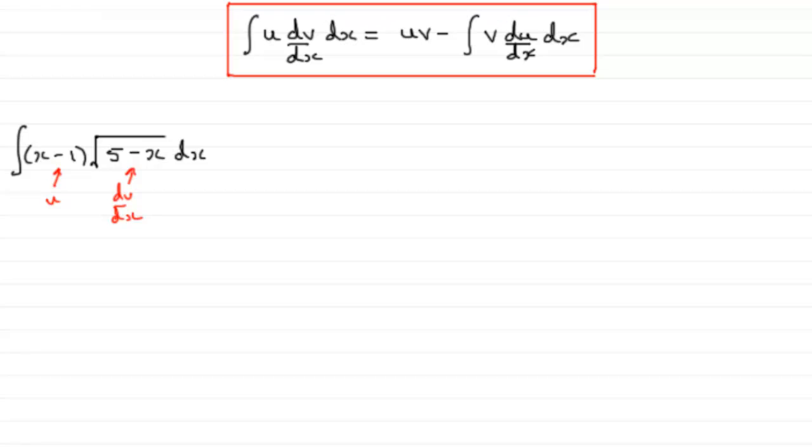So let's get on then and start integrating this. So it's u times v. One part, this part, multiplied by the integral of the other part. And the integral of this, we found out earlier, was minus 2 thirds then multiplied by 5 minus x to the power 3 over 2.